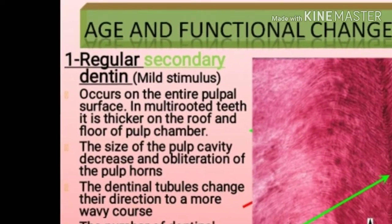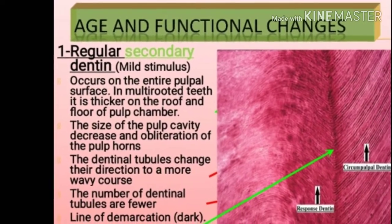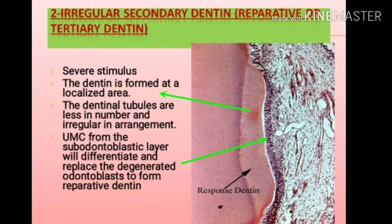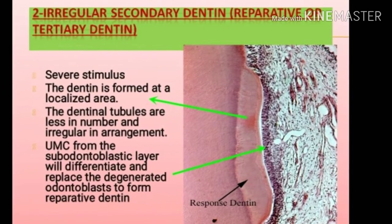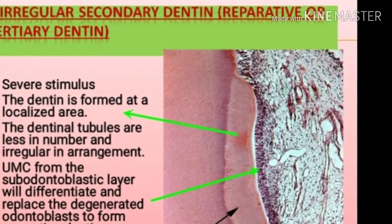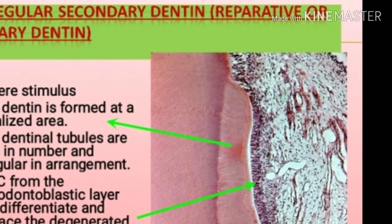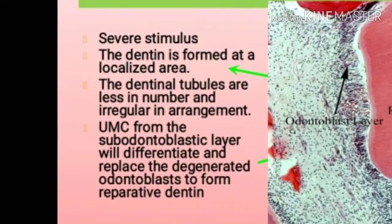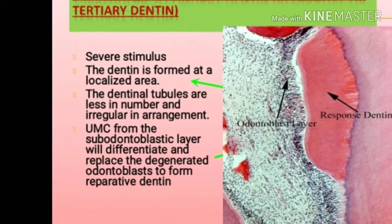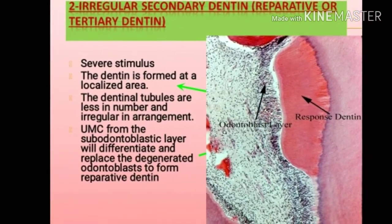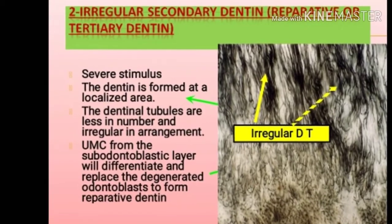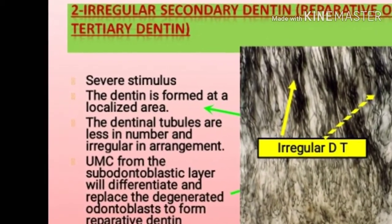The figure shows the line of demarcation, the circumpulpal dentine, and the response dentine. Irregular secondary dentine, also called reparative or tertiary dentine, is formed as a result of severe stimulus. The dentine is formed at a localized area and the dentinal tubules are less in number and irregular in arrangement. Undifferentiated mesenchymal cells from the subodontoblastic layer will differentiate and replace the degenerated odontoblasts to form reparative dentine. The figure also shows the irregular secondary dentine, reparative or tertiary dentine, and the irregular dentinal tubules.